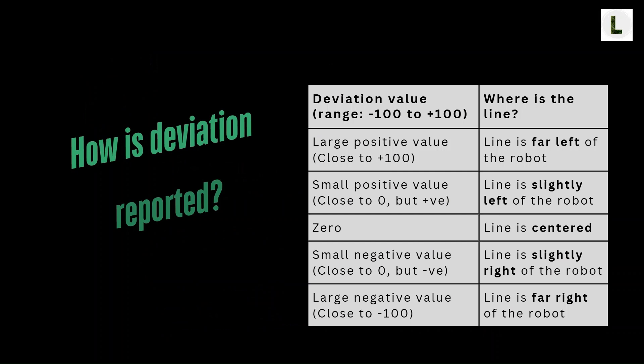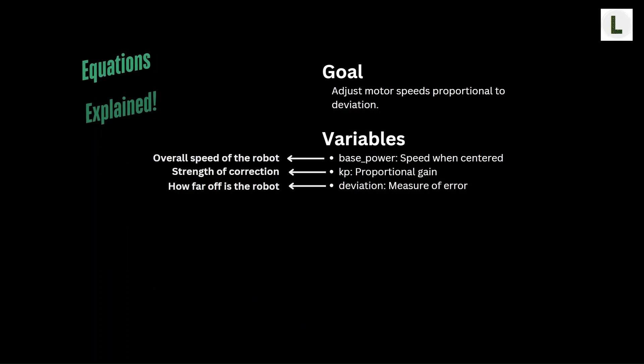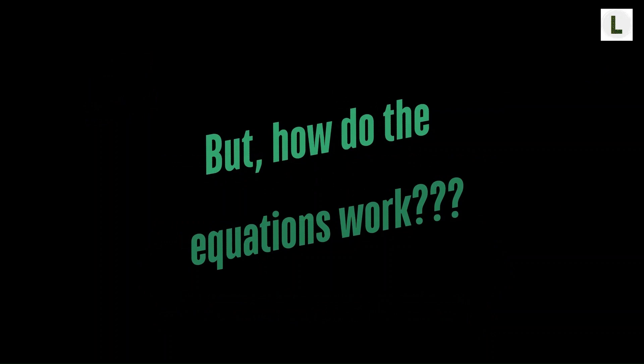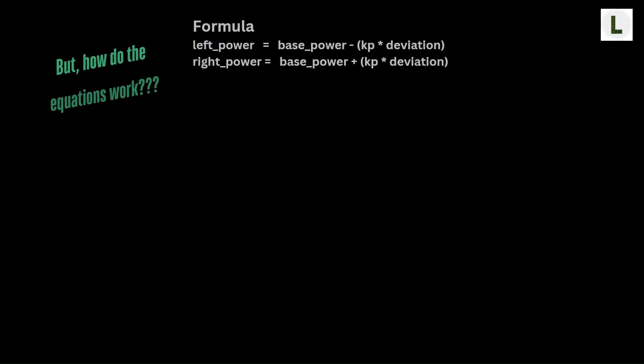Now that you know what the deviation values mean, let's look at the equations. Computing the left and right motor power is done by taking the base power and adjusting it by a factor proportional to the deviation from the center of the line. To understand these equations better, let's walk through five examples. We'll assume base power is 30% and Kp is 0.3. Increasing base power increases overall speed; increasing Kp increases the strength of corrections, making the robot more aggressively correct.